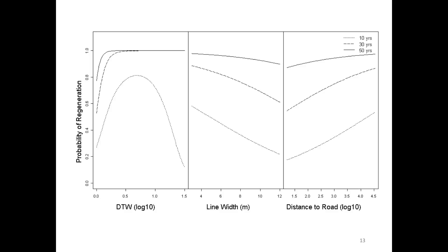Looking at the probability of regeneration to 3-meter height on the y-axis against the log10 depth to water: after 10 years since clearing, we see a high probability of regenerating at mesic moisture levels, but much more limited recovery in very wet areas. After 30 or 50 years, dry sites reach 3 meters with high probability, but there's still more limitation in very wet areas. Line width showed the wider the line, the less probability of regeneration. Distance to road showed that the further away, the higher likelihood of reaching 3-meter recovery height.